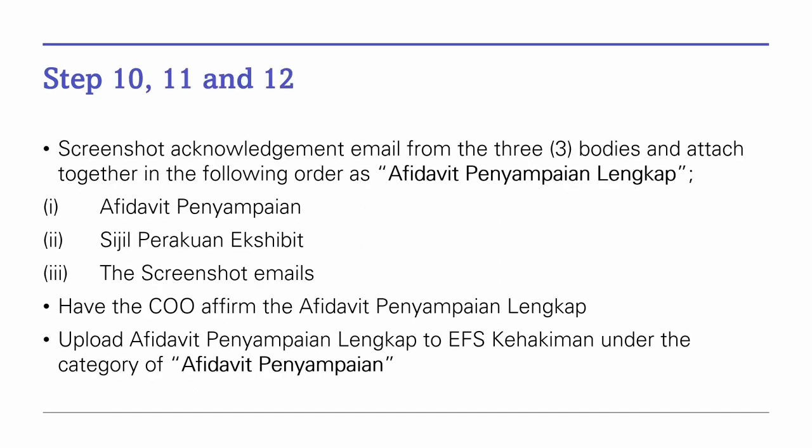Step 10: Screenshot the acknowledgement email from the three bodies and attach it together with the Affidavit Penyampaian and Sigil Perakuan exhibit as one document. Step 11: Find a Commissioner of Oath to affirm your Affidavit Penyampaian together with the Sigil Perakuan exhibit and screenshot emails as one document. Step 12: Upload the three documents together under the category of 'Affidavit Penyampaian'.